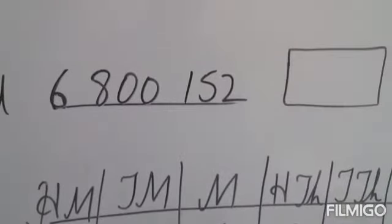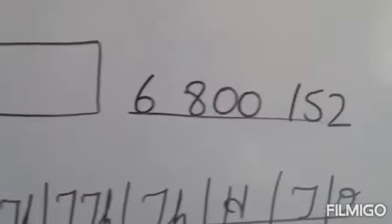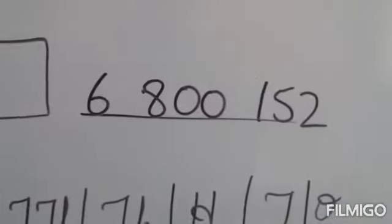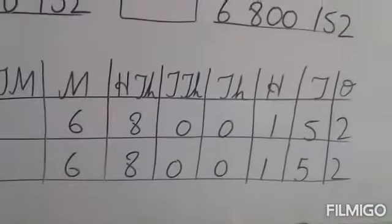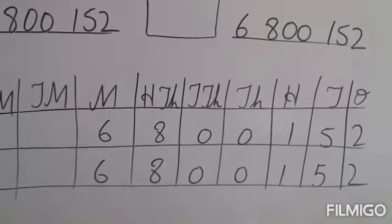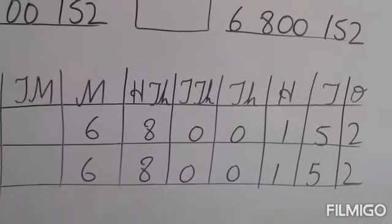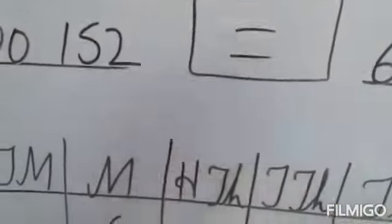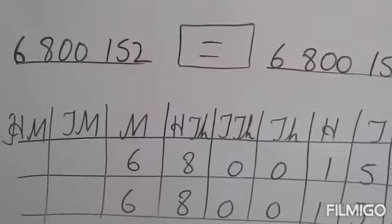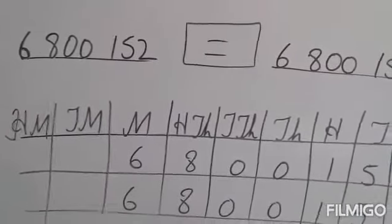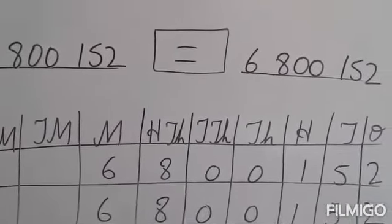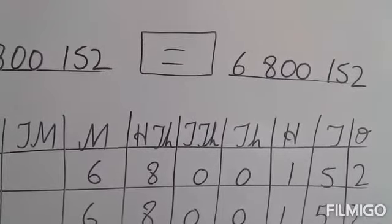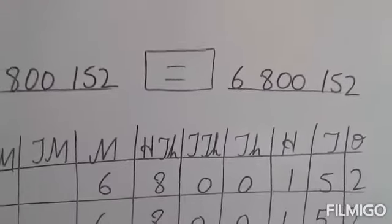Question D: 6,800,152 and 6,800,152. By putting these numbers in the place value chart, we see that both numbers are the same at all place values. So we put the sign of equality: 6,800,152 is equal to 6,800,152.